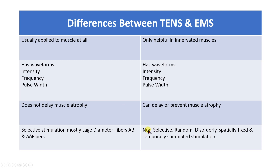EMS cannot selectively target any fiber type — it affects all fiber types, both nerve and muscle, randomly. It is disorderly in that there is no application of Henneman's size principle. The stimulation is spatially fixed, meaning pulses come from fixed locations in different directions, and temporally summated, meaning pulses applied at different time intervals are summed together, resulting in a tetanic contraction.